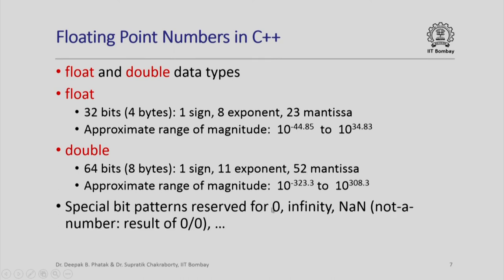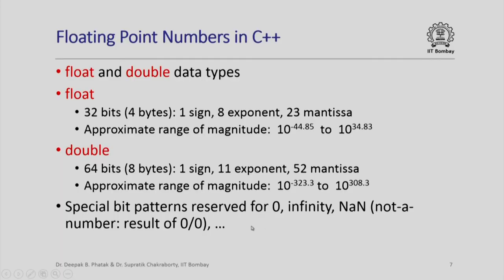We cannot represent 0 exactly if we use a normalized mantissa, so special bit patterns are reserved for 0. Not only for 0, but also for other special values such as positive infinity, negative infinity, and things called Not a Number (NaN), which are the result of certain operations. For example, if you try to divide 0 by 0 you get something that is not really a number, and in a computer this is represented by a special bit pattern called Not a Number.